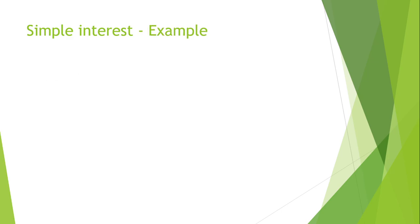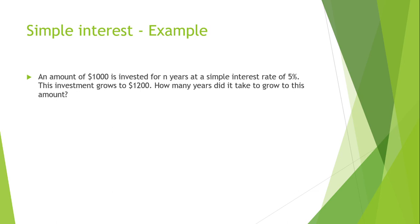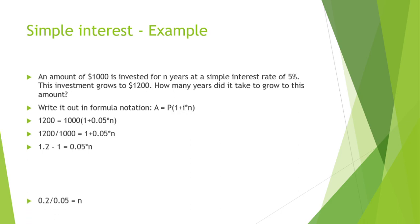Let's look at an example. An amount of $1,000 is invested for N years at a simple interest rate of 5%. This investment grows to $1,200. How many years did it take to grow to this amount? So, first we want to write it out in the normal formula notation. So, inputting the values into the formula, we have this formula. So now, we just basically try to get N alone so that we can solve for the period. By doing this, following some simple mathematical steps, we get to an answer of N equals 4 years.